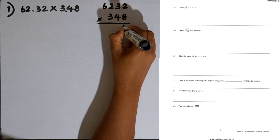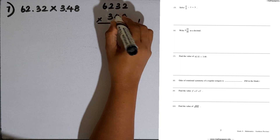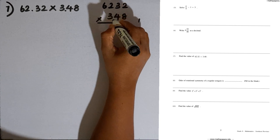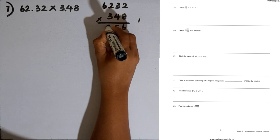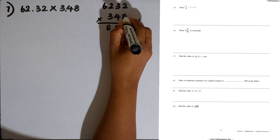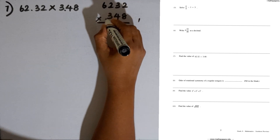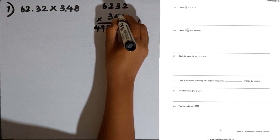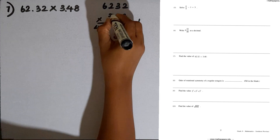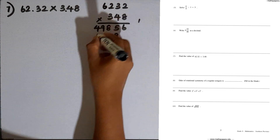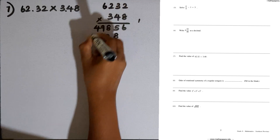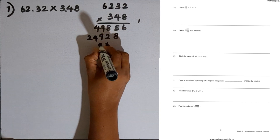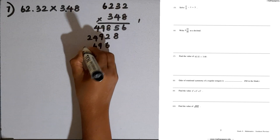Now working through the long multiplication of 6232 by 348: 8 times 2 is 16, carry 1. 8 times 3 is 24 plus 1 is 25, carry 2. 8 times 2 is 16 plus 2 is 18, carry 1. 8 times 6 is 48 plus 1 is 49. Then for the tens digit: 4 times 2 is 8, 4 times 3 is 12 carry 1, 4 times 2 plus 1 is 9, 4 times 6 is 24. For hundreds: 3 times 2 is 6, 3 times 3 is 9, 3 times 2 is 6, 3 times 6 is 18.